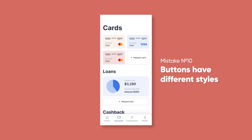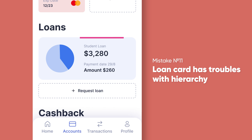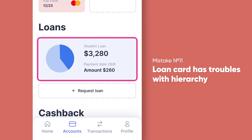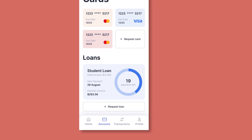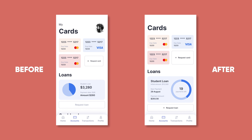I made the same style for both buttons. The next problem is hierarchy — the loan card holds information about the amount and date of the next payment and the initial loan size. The chart should represent the correlation between paid and unpaid loan amounts, but the card has many problems. 'Student loan' is the name of the loan, not a label for the initial amount. The date and amount of the next payment are unequal because the amount has more contrast than the date, and the date has poor visibility due to small font size. So I put emphasis on the title, placed the initial amount in a smaller size under it, organized the next payment date and amount in a column with labels and higher contrast text, and included information about payments remaining. Now it's clear why we have the chart and what it exactly means.